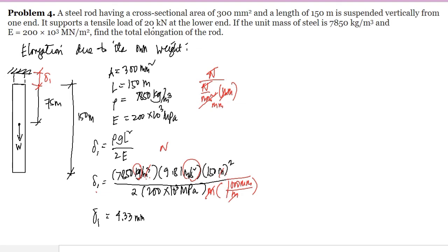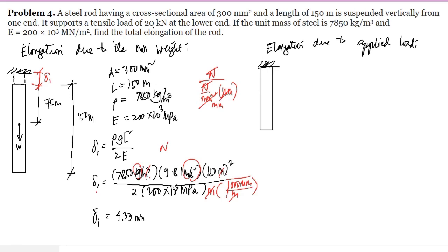Next, we compute the elongation due to the applied load. For this bar with length = 150 meters and applied load P = 20 kN = 20 × 10³ N, applying that load produces Deformation 2. For Deformation 2, we use the formula: δ = PL/AE.